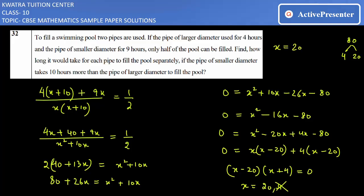So what this means is that the larger pipe would alone fill the tank in 20 hours, because x is 20. And x + 10 is 30, so the smaller pipe would take 30 hours. So now we have our complete information and you have the answer.